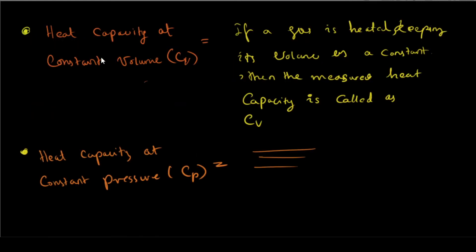This is the heat capacity at constant volume. If the gas is heated keeping its volume constant, then the measured heat capacity is called Cv. This is the heat capacity measured with volume constant. We can also measure the heat capacity at constant pressure, Cp.